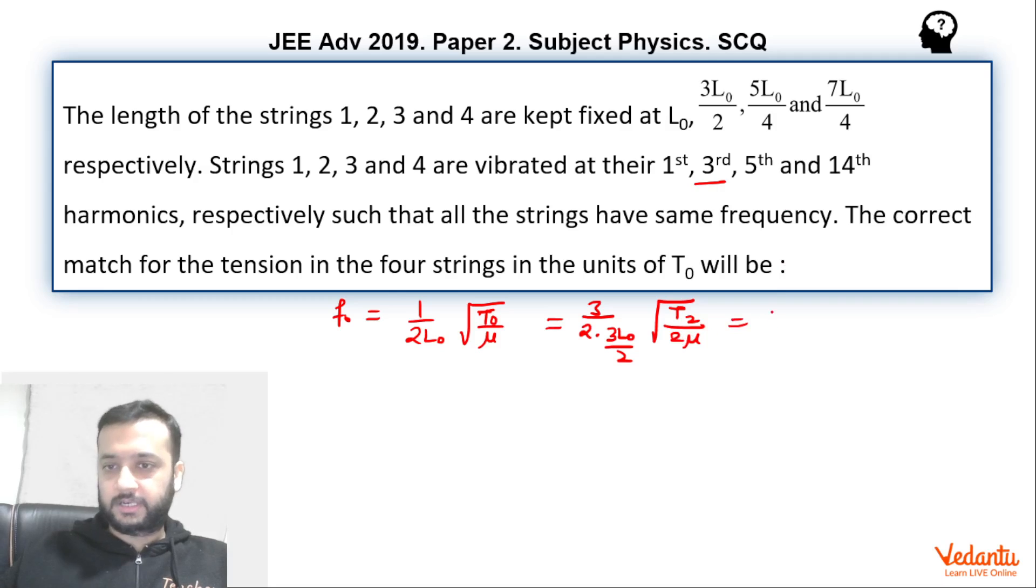For the third string in fifth harmonic: 5 over 2 into length 5L0 by 4 into root T3 upon 3 mu. And the 14th harmonic: 14 upon 2 into length 7L0 by 4, so 4 goes in the numerator, into root T4 upon 4 mu. This is the equation.